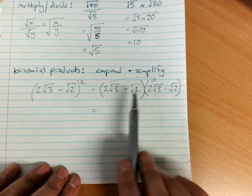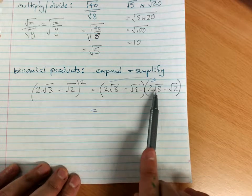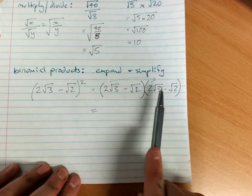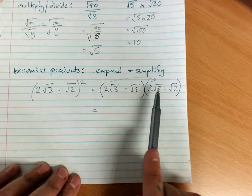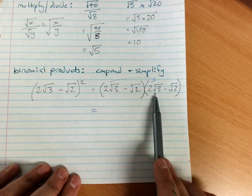When you're multiplying, the coefficient times the coefficient, just like you would with algebra, 2 times 2 is 4. Then times root 3 times root 3. Now what's root 3 times root 3? Just 3. So this is 2 times 2 times 3. So that is 4 times 3, which is 12.